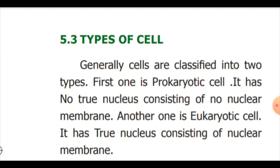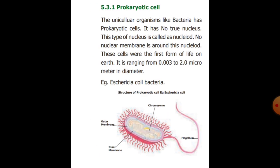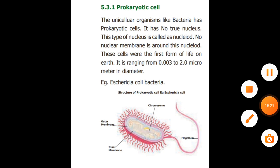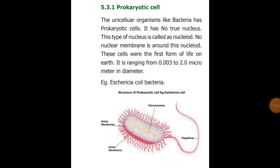There are two types of cells: prokaryotic and eukaryotic. A prokaryotic cell has no true nucleus — it has no nuclear membrane. This type of nucleus is called a nucleoid, and no nuclear membrane surrounds this nucleoid. Prokaryotic cells were the first different form of life on Earth, ranging from 0.0003 to 2.0 micrometers in diameter. An example of a prokaryotic cell is Escherichia coli bacteria.